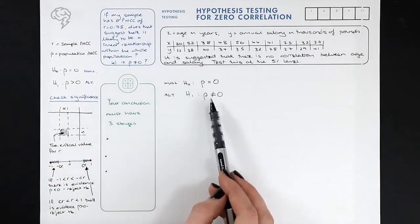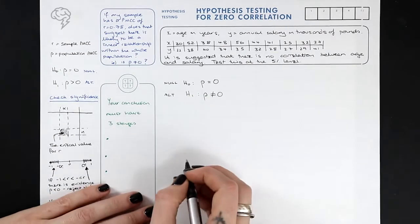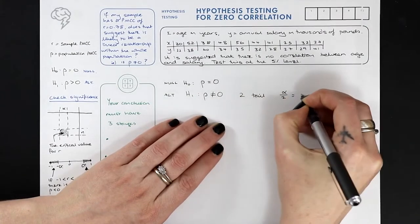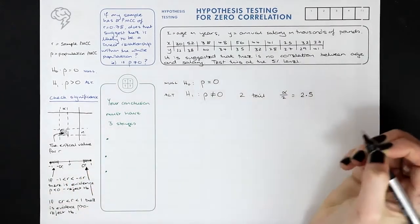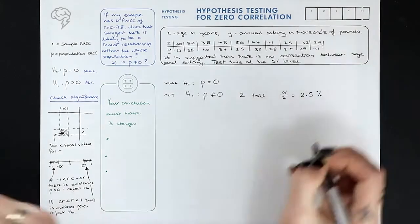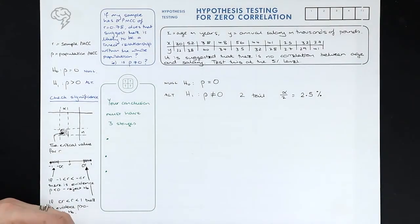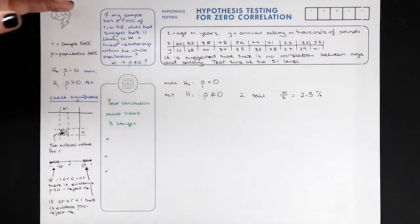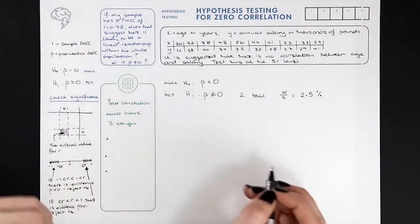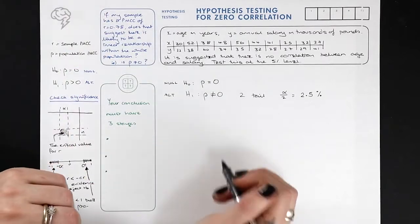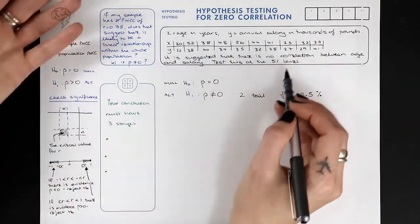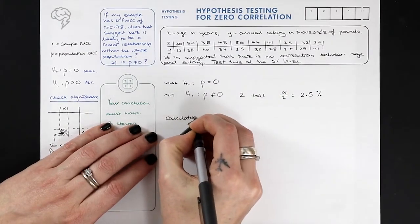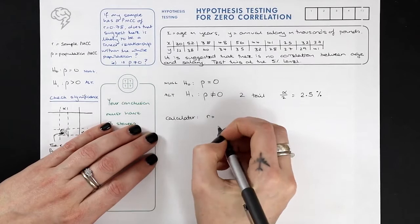With a two-tailed test I need to halve my significance level, so alpha over 2 is 2.5%, giving me 2.5% significance. Now I need the value of my test statistic to see whether or not it suggests there is a linear relationship in the population. You'd use your calculator — that's covered in another video — and using the calculator we get r (not rho): r is 0.340.